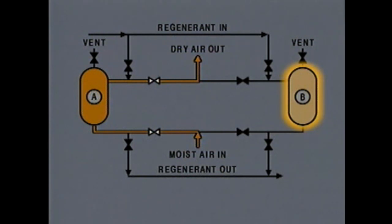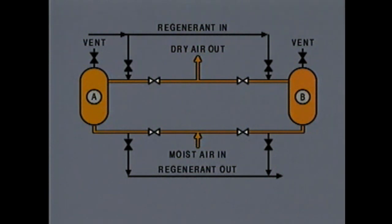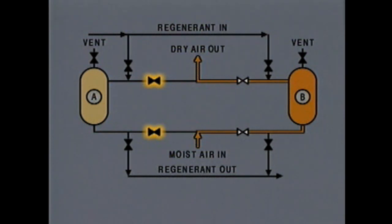To put dryer B in service so that dryer A can be isolated and its drying agent regenerated, these valves are opened. This allows air to pass through the drying agent in dryer B and out of the system. Closing these valves isolates dryer A.